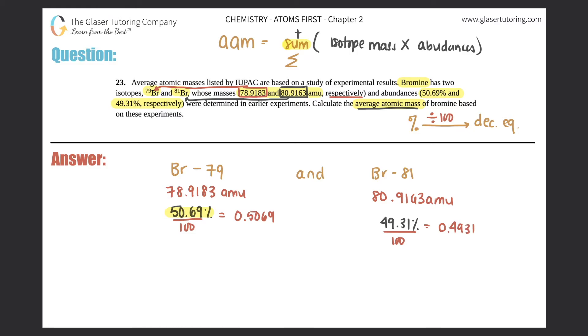Those are the numbers that you multiply. So you'll multiply your decimal percent abundance with the mass, decimal percent abundance with the mass. So let's get to it. So we're just going to say 78.9183 times 0.5069, and this one would be 80.9163 times 0.4931. Let's get those numbers.